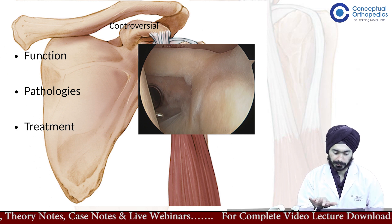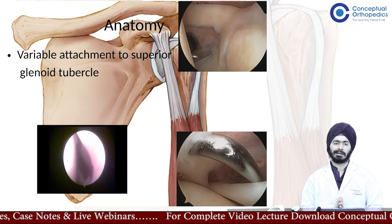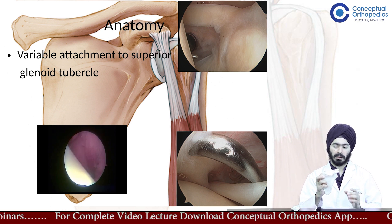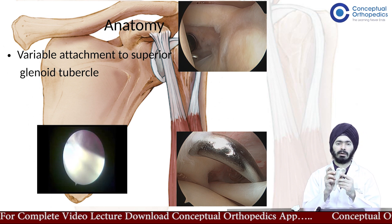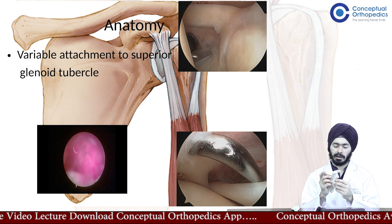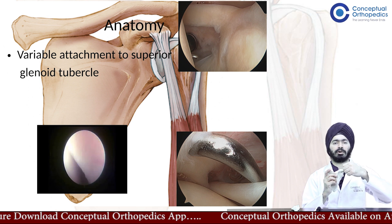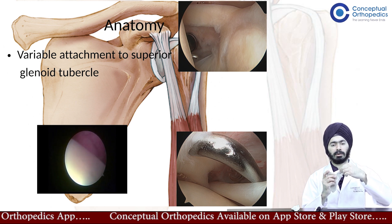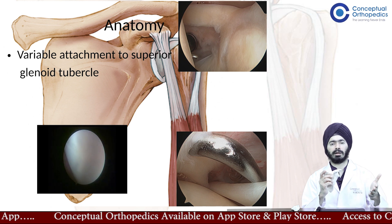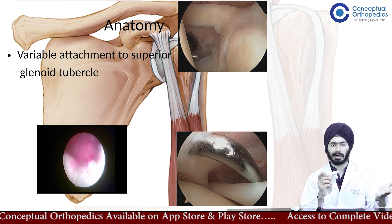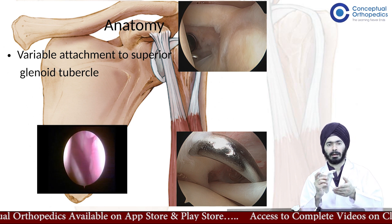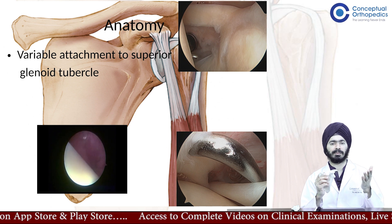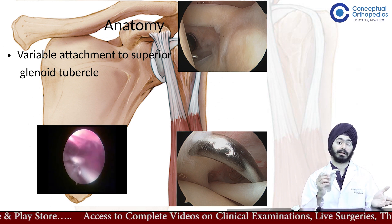Where does the long head of biceps attach? Looking at the scapula and the glenoid, the long head of biceps attaches on the superior glenoid tubercle along with attachment on the superior labrum. So it attaches to the bone — the superior glenoid tubercle — through the superior labrum. However, this attachment through the superior labrum has a very variable anatomy; it is different in different individuals.